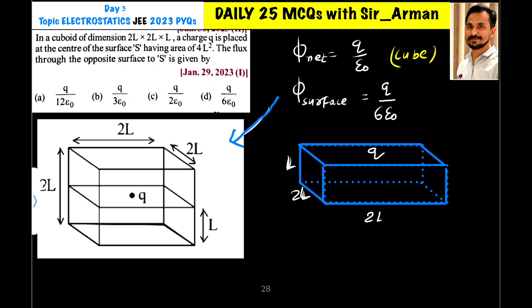Which face has area 4L square? This is 2L, this is 2L. So this is 2L into 2L, 4L square. This surface, bottom surface and the upper surface has area 4L square.